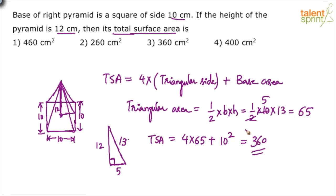The explanation took time because we drew the diagram first and then found the triangular face area and base area step by step. But if you know what to do and skip the diagram, you can solve this in less than 30 seconds. The answer is 360 centimeters squared — option 3.